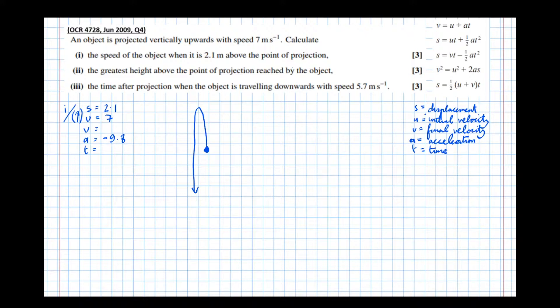S equals ut plus 1 half at squared. Well, we need v, and v's not in that equation. S equals vt minus 1 half at squared. Well, v's in there, and we need v. However, it's got a variable t, which we haven't got a value for.